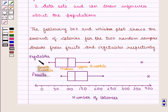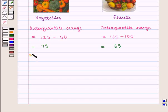And median in case of vegetables is given by 100, and in case of fruits is equal to 125. So median for vegetables is given as 100, and for fruits it is equal to 125.